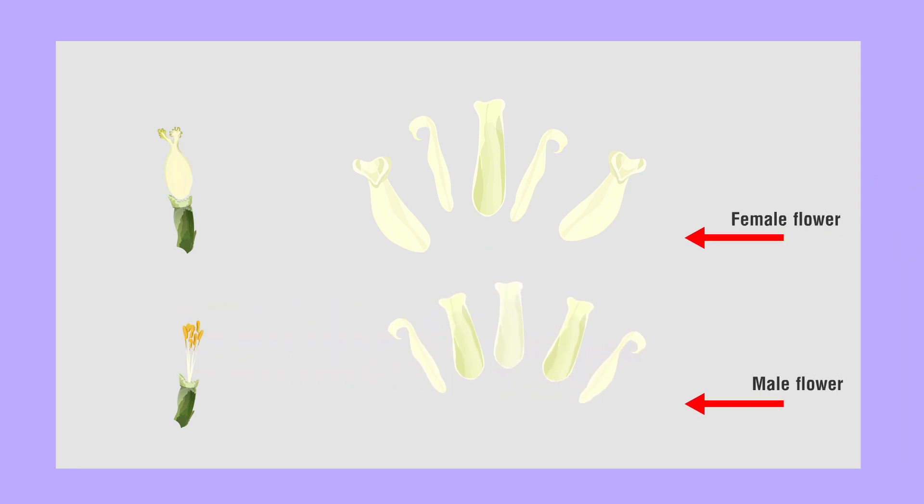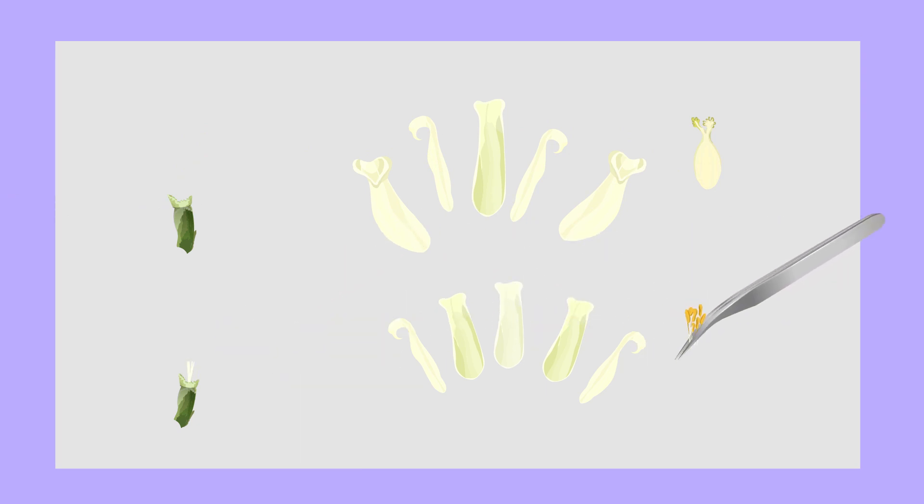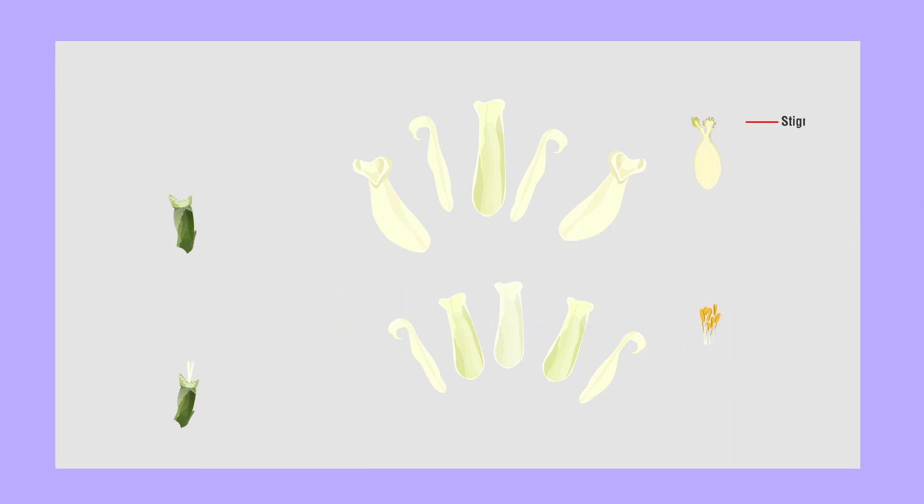Observe both the flowers. Using a blade, separate the male and female reproductive parts of the flower and keep them on paper. Observe and identify the parts of the papaya flower.